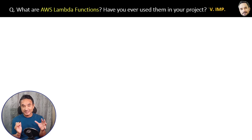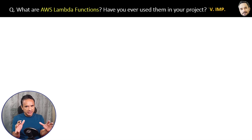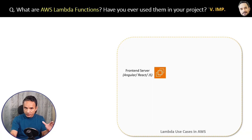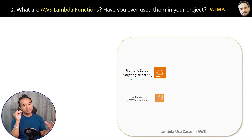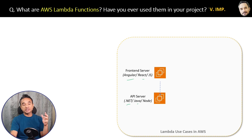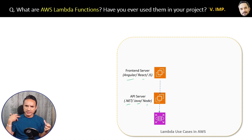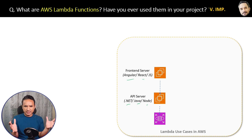What is AWS Lambda and have you ever used it in a project? This is a very important interview question. Let's understand with an example. Suppose you are a developer and your team has created a web application in AWS — you have a front end built in Angular or React.js, which passes requests to a back end or API server in .NET, Java, or Node.js, and everything connects to the database. The front end and back end can be hosted in EC2 instances or using Elastic Beanstalk.